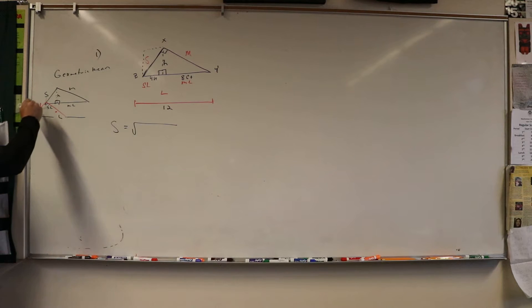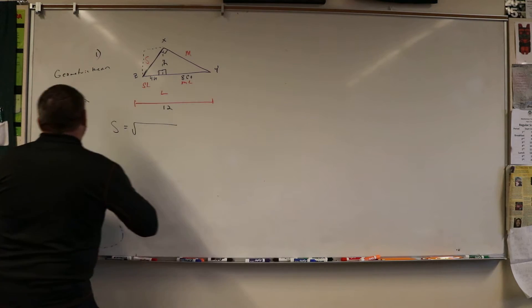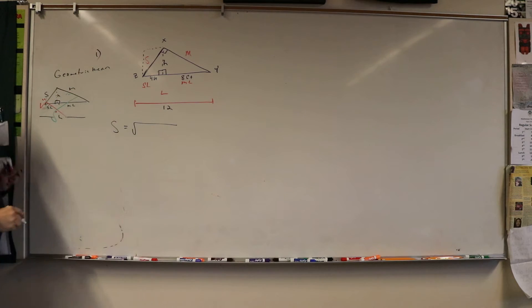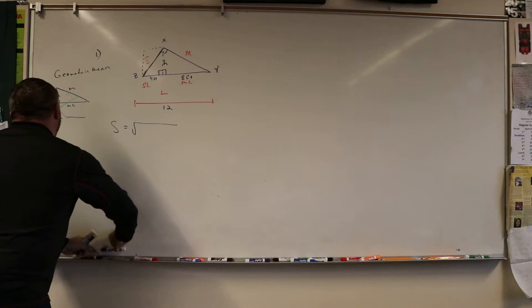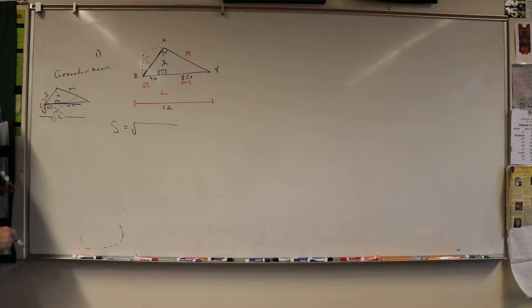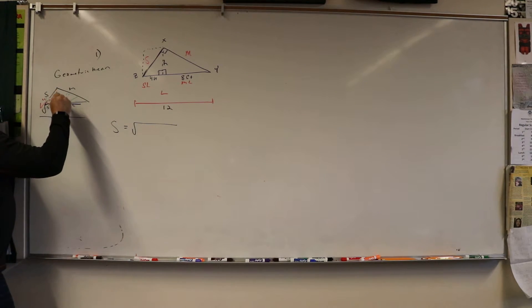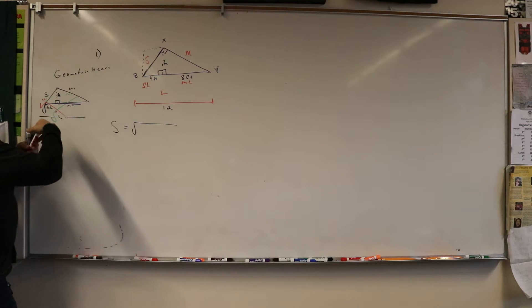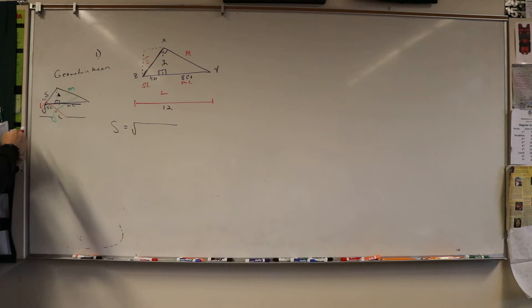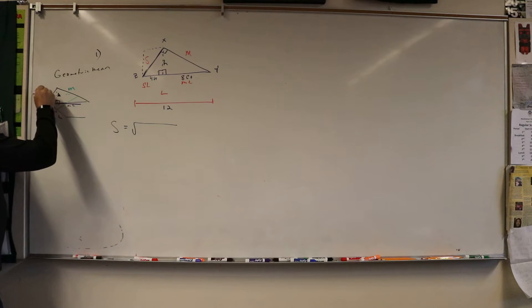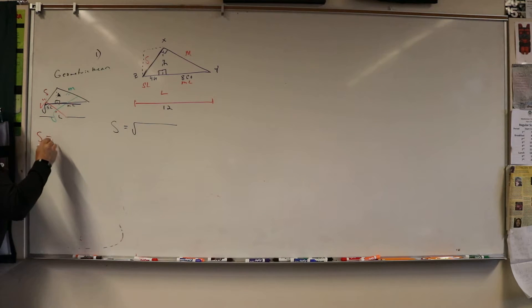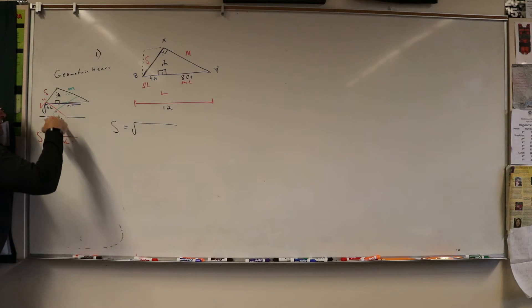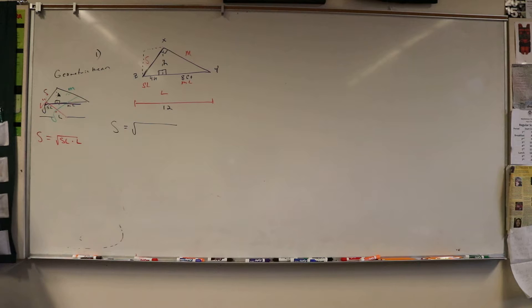The small is equal to this, this medium is equal to this, and the large or the height is equal to this. The small is always going to be equal to the square root of the SL times the L, and the M is going to be equal to the L.